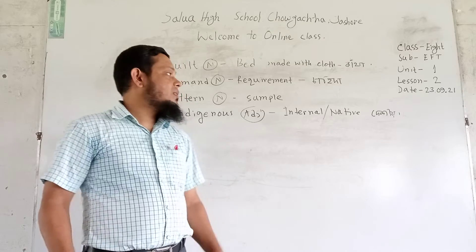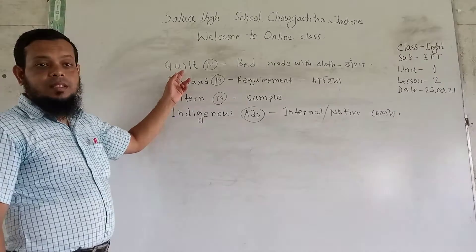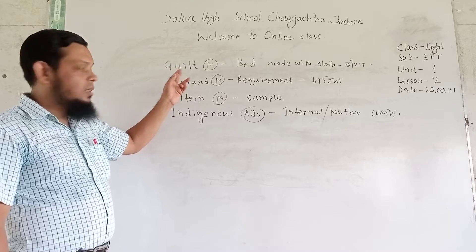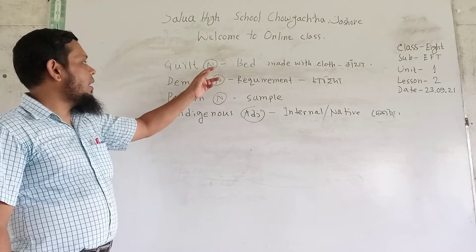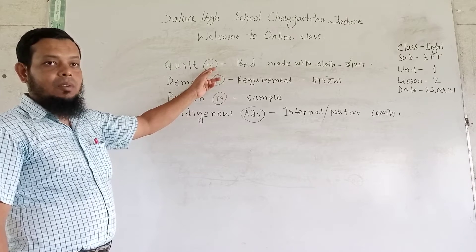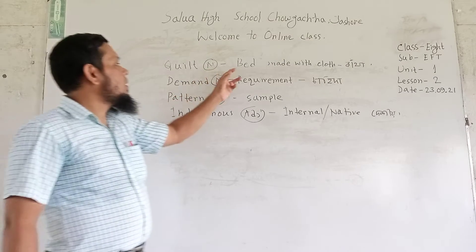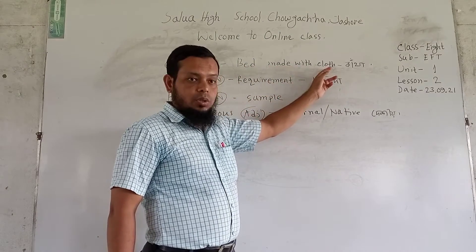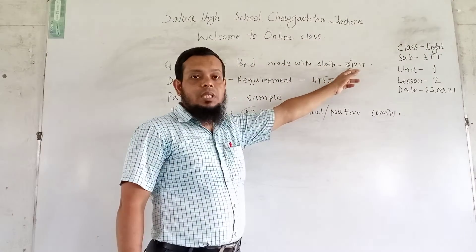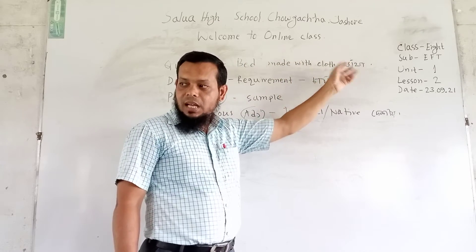The first vocabulary word is: Quilt. The pronunciation is 'Quilt.' The part of speech is noun. The English meaning is: a bed covering made with cloth. The Bangla meaning is: Katha.